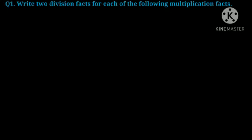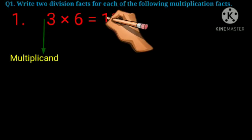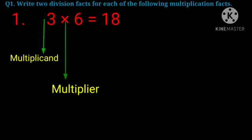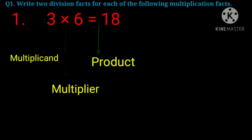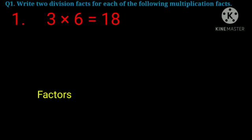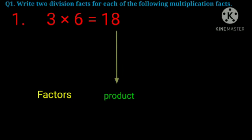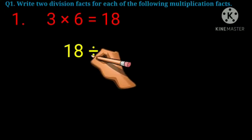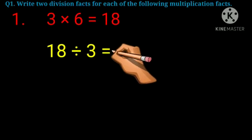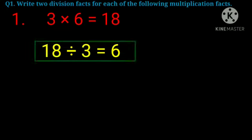Question 1: Write 2 division facts for each of the following multiplication facts. The first question is 3 into 6 equals 18. Here 3 is the multiplicand, 6 is the multiplier, and 18 is the product. Or you can also say that 3 and 6 are the two factors of 18. To find the division fact from a multiplication fact, we divide the product by each of the two factors. So the first division fact is 18 divided by 3 equals 6, because 3 sixes are 18.